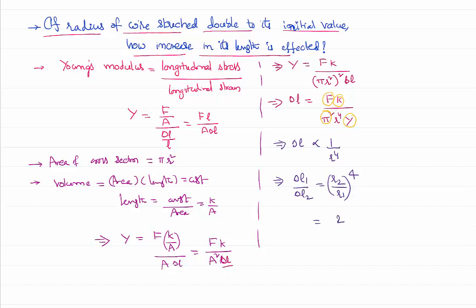r2 is 2r in our problem, radius is doubled. r1 is r itself, whole to the power 4. So 2 to the power 4 is nothing but equal to 16.